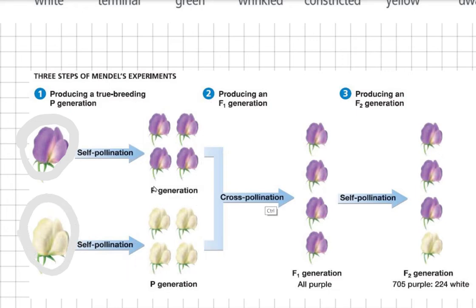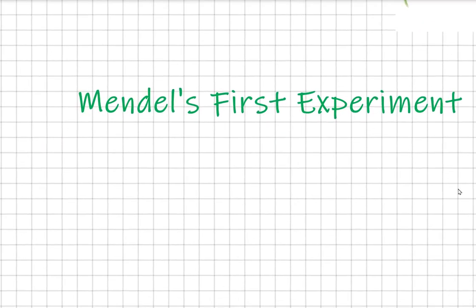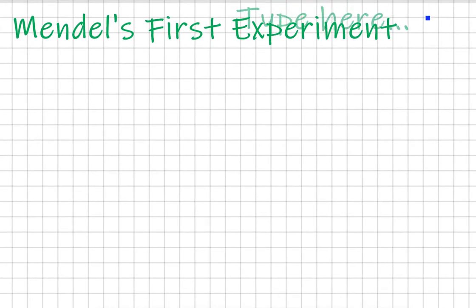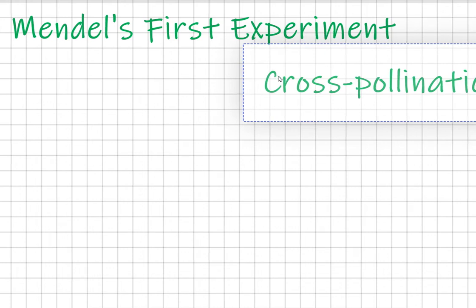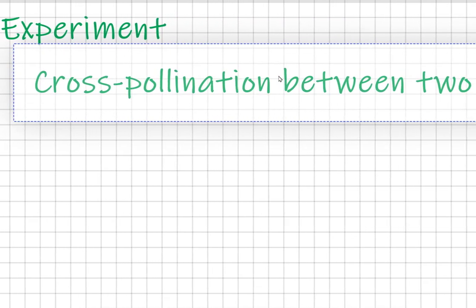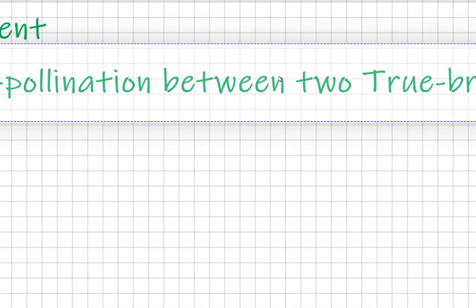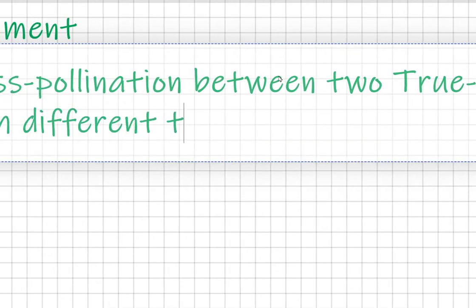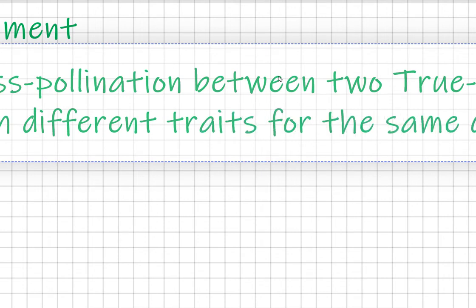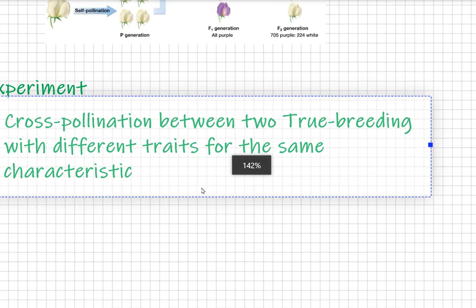Now let's analyze this experiment clearly. Mendel's first experiment can be titled: cross-pollination between two true-breeding (pure, or homozygous) plants with different traits for the same characteristic.